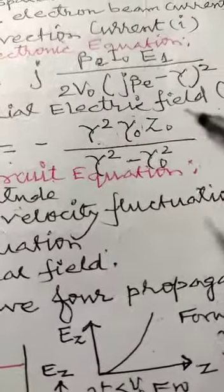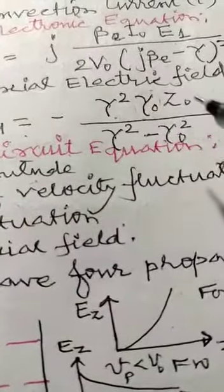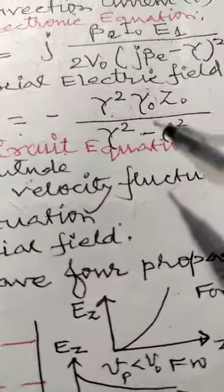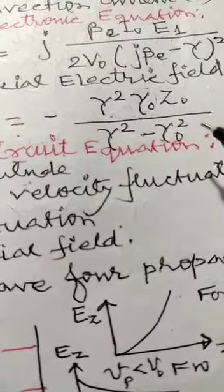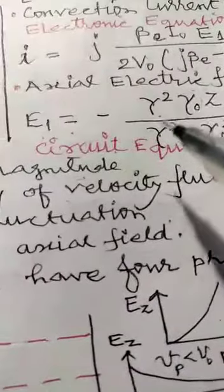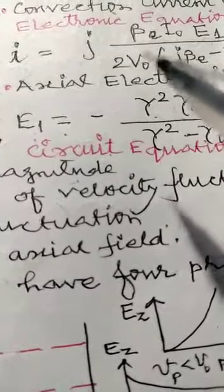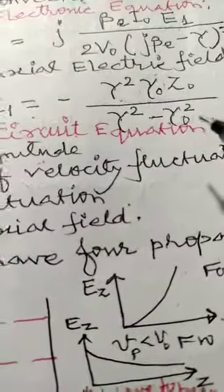Axial electric field equation is E1 equals minus gamma square gamma 0 Z0 divided by gamma square minus gamma 0 square. Gamma 0 is the propagation constant at 0 input current, and gamma is the propagation constant at an instant of time of the current except that condition of 0 current.